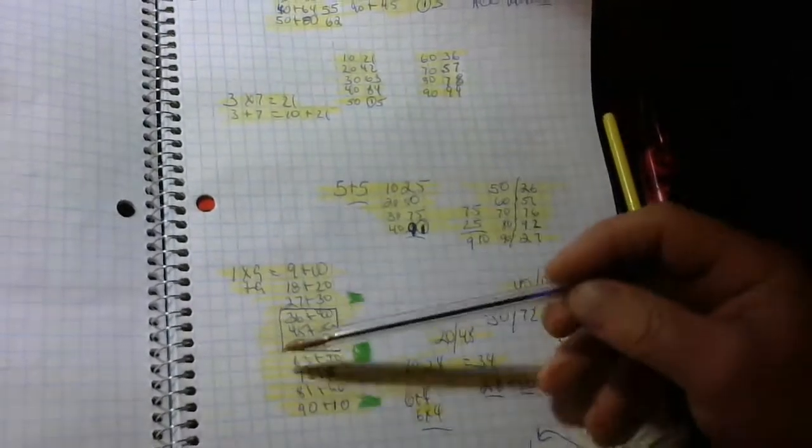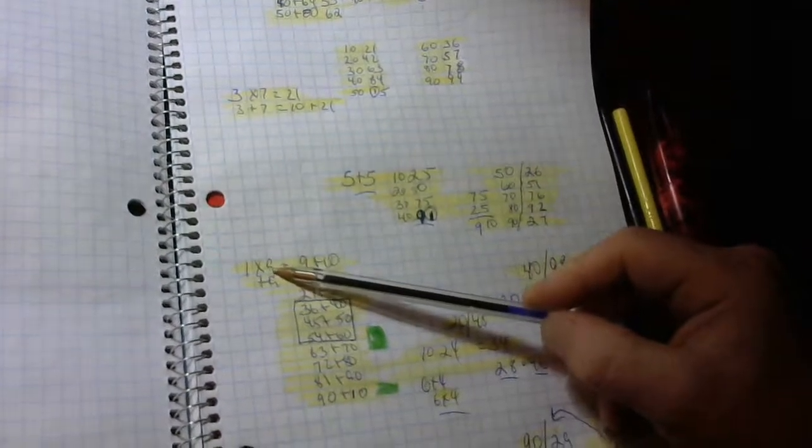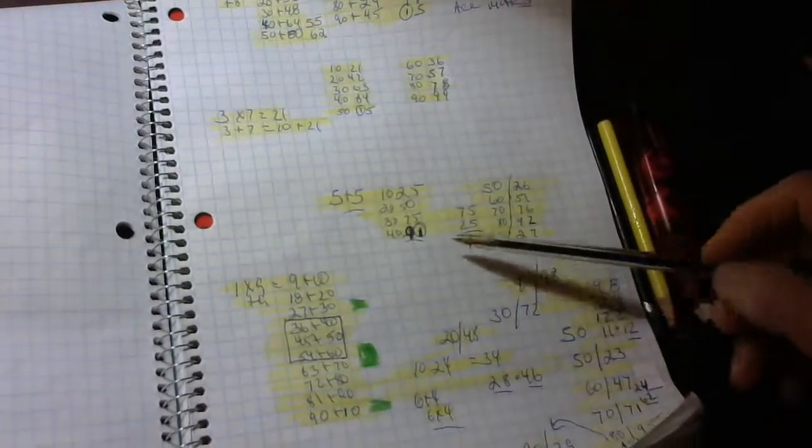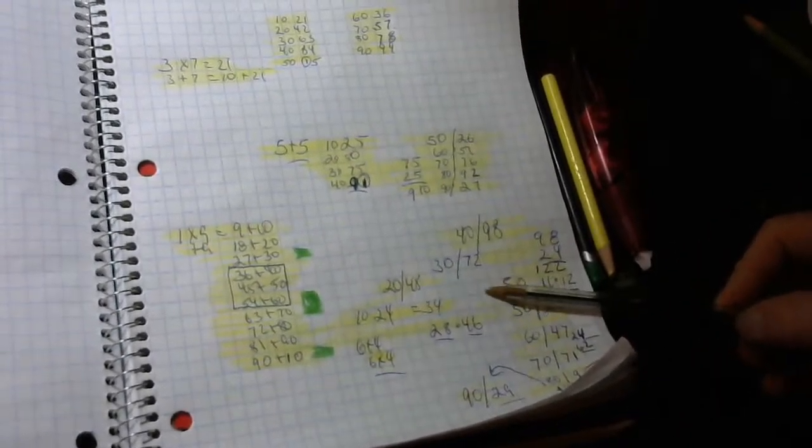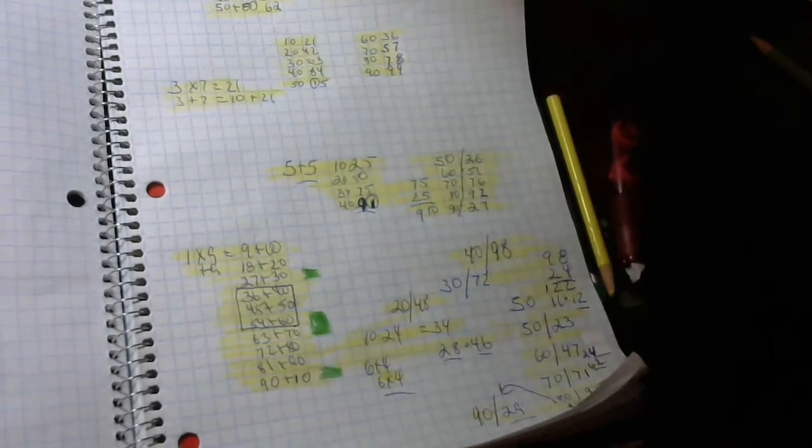Bunch of numbers, right? What they are is additions to tens. 1 and 9, 2 and 8, 3 and 7, 2 and 8, 3 and 7, 4 and 6, 5 and 5.